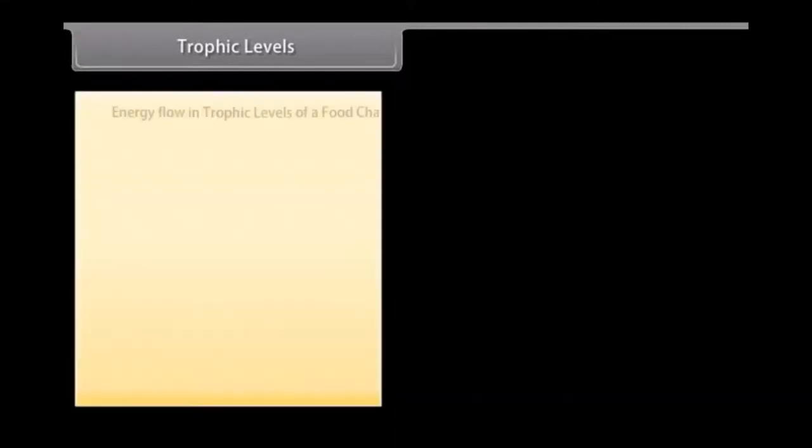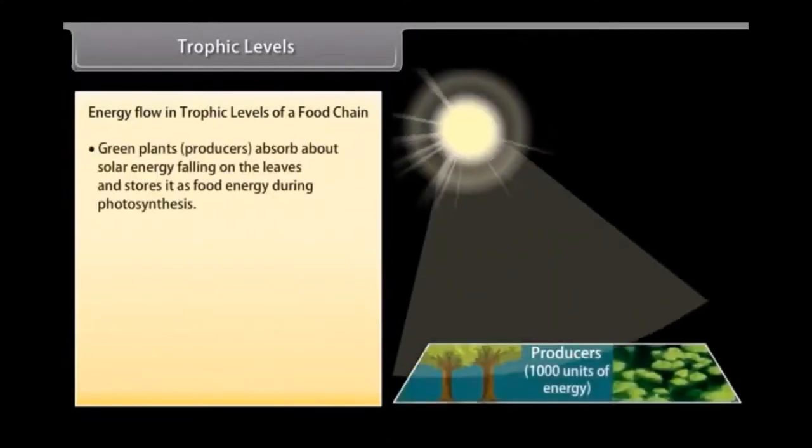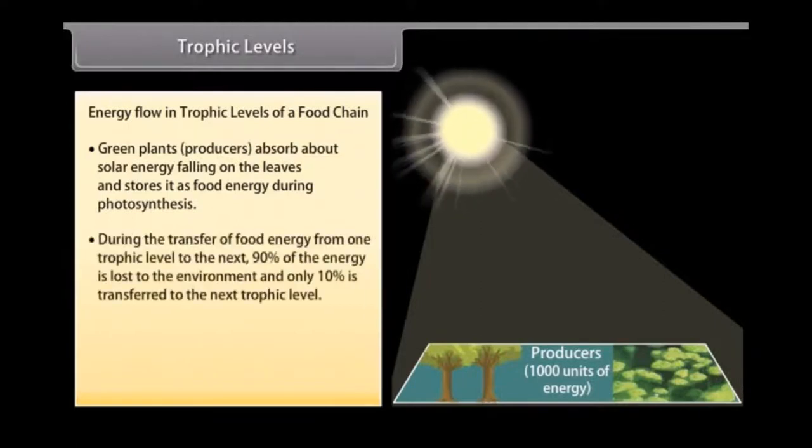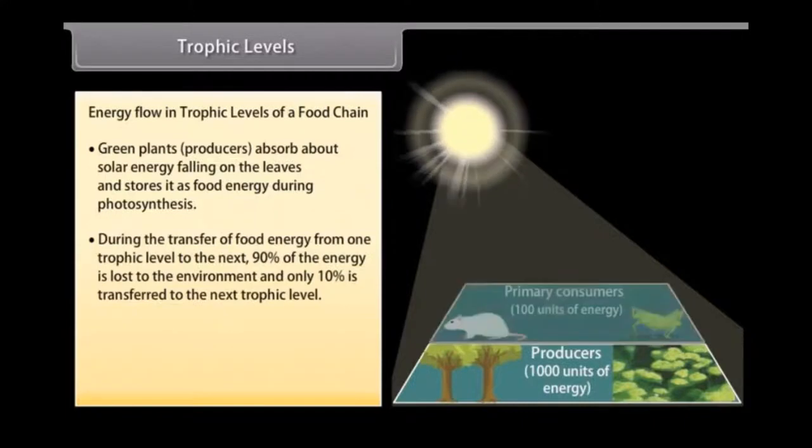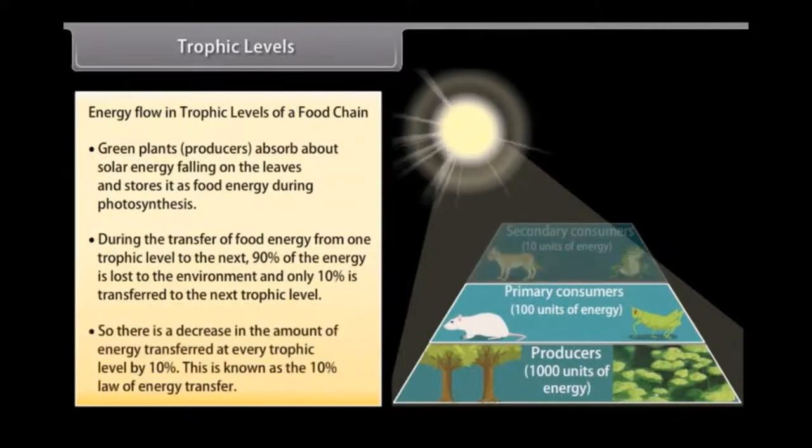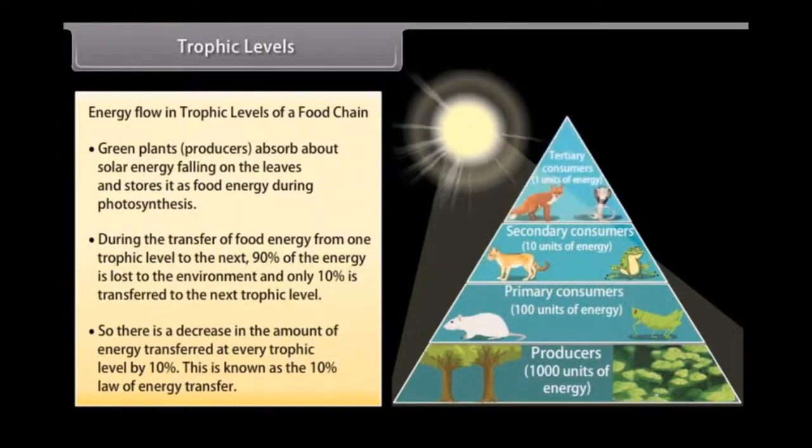Trophic levels. Energy flow in trophic levels of a food chain. Green plants, producers, absorb about 1% of solar energy falling on the leaves. During the transfer of food energy from one trophic level to the next, 90% of the energy is lost to the environment and only 10% is transferred to the next trophic level. There is a decrease in the amount of food energy transferred at every trophic level by 10%. This is known as the 10% law of energy transfer.